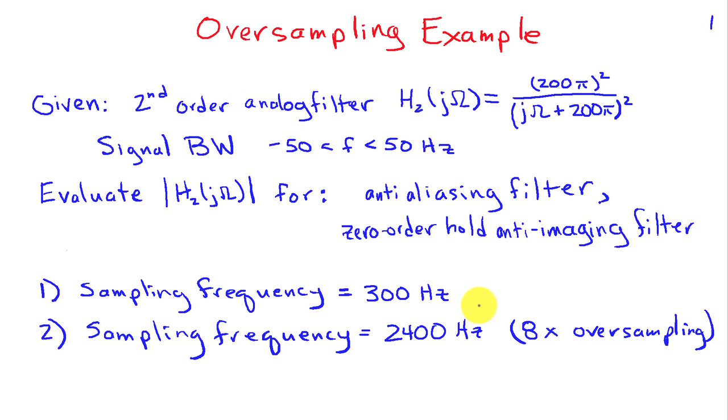We're going to assume that we have access to a second-order analog filter and its frequency response takes the form that I've indicated here. It's basically 200π squared divided by the quantity jω + 200π squared, and we'll assume that our signal bandwidth is between -50 and 50 Hz.